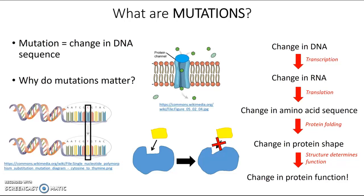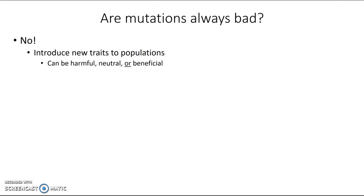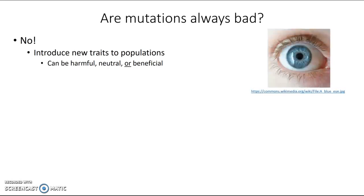So you might be thinking to yourself, that's really bad — mutations must be a really bad thing. And they can be. But are mutations always bad? The answer is no, because mutations can introduce new traits into populations. These new traits can be harmful, neutral, or beneficial. For example, blue eyes in humans — we think this arose due to a mutation in one human less than 10,000 years ago. And as you know, this is not generally a super harmful mutation; it doesn't kill everyone who has it. So mutations can be good, they can be bad, or they can be kind of in between.